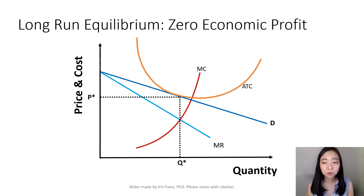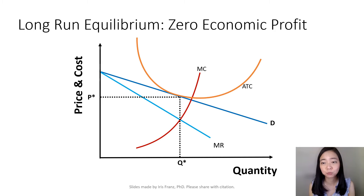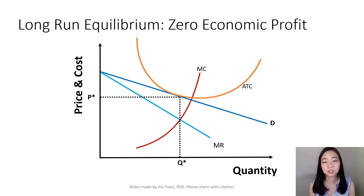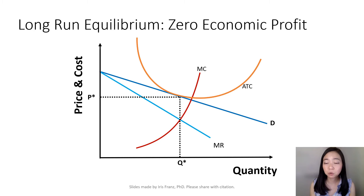Here is the long-run equilibrium for a firm in monopolistic competition. Each firm will set marginal revenue equal to marginal cost to find the quantity Q*. Given Q*, we go back to the demand curve to see what price we should charge — we will charge price P*. Notice that because of zero economic profit, the price P* is exactly equal to average total cost.